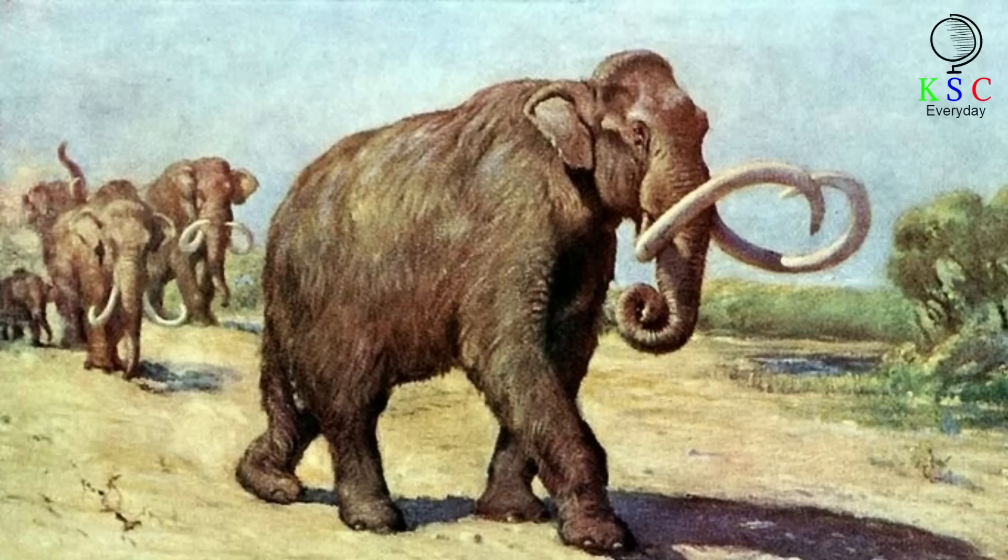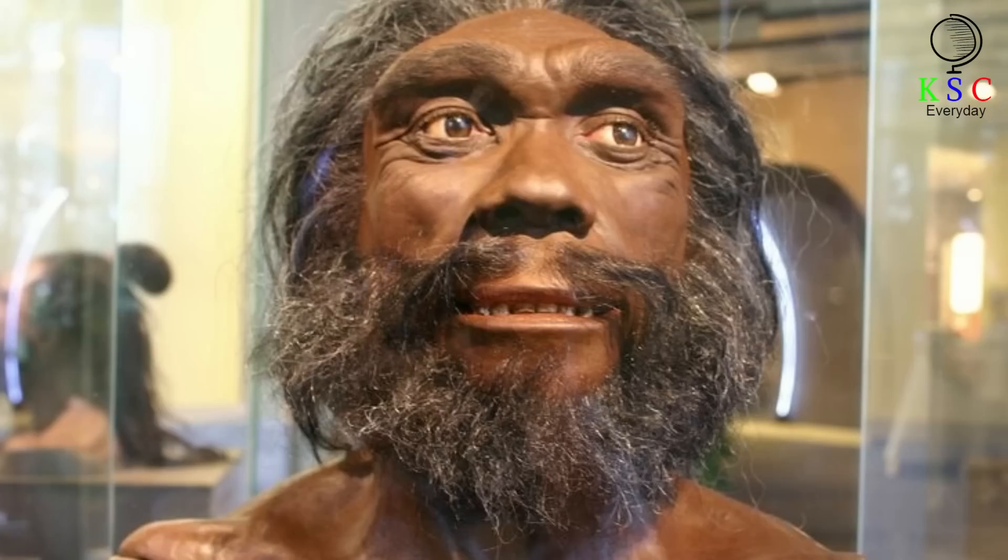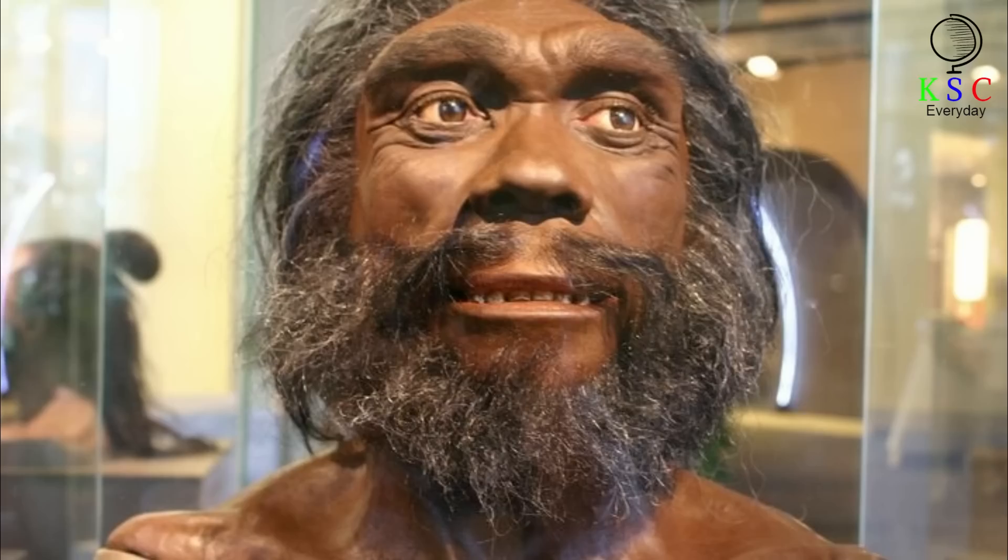But despite Homo heidelbergensis's many strengths, the species still died out. You should know, though, that Homo heidelbergensis didn't disappear from the Earth without leaving a trace. Far from it, in fact. An estimated 390,000 years ago, in the Middle Pleistocene era, a number of different species began to split off from this common ancestor. And from these branches, modern humans would ultimately emerge.